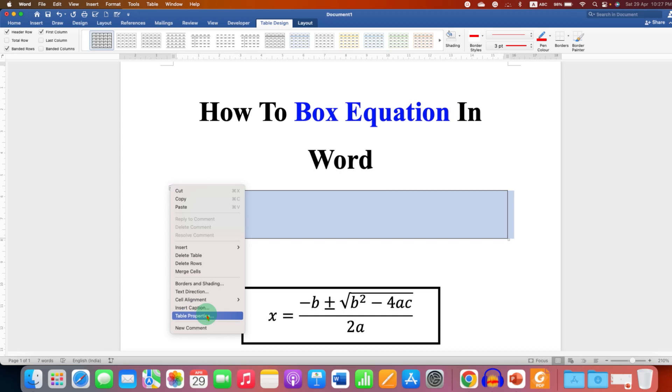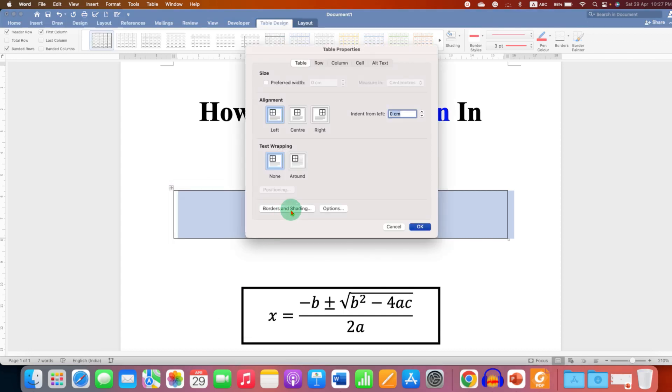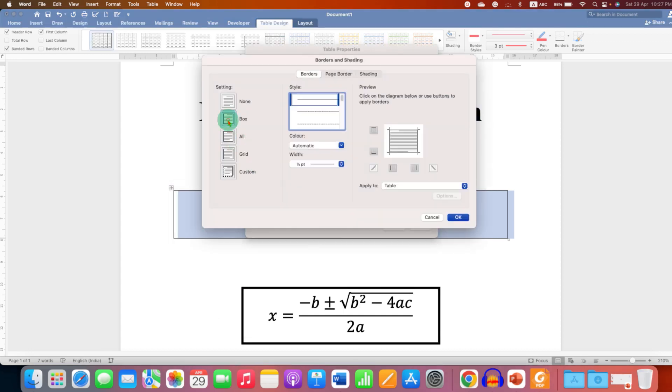Then go to the Table Properties, click Border and Shading, select the option Box, and under the Width select the line thickness, for example three points. You can see the preview here. Make sure you have selected here Table,